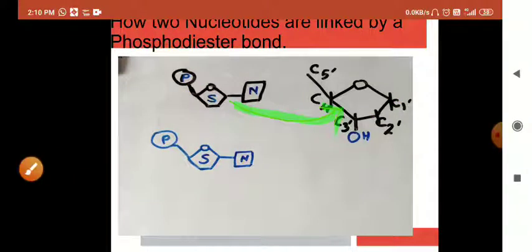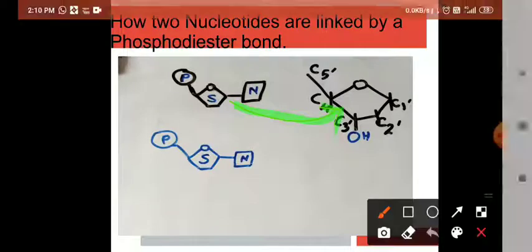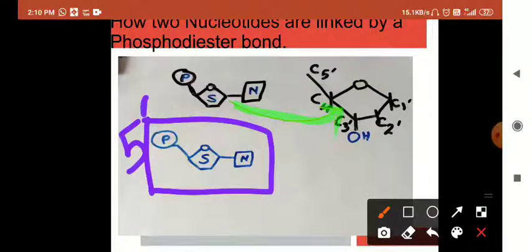So what should happen here? This nucleotide has come. This nucleotide has come. It is already having a 5' P-phosphate.